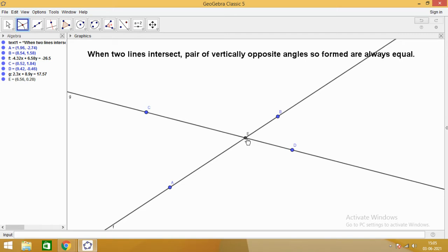So one thing which is clear is that sum of all the four angles which are formed around the point E is 360 degrees. We can verify that as well.